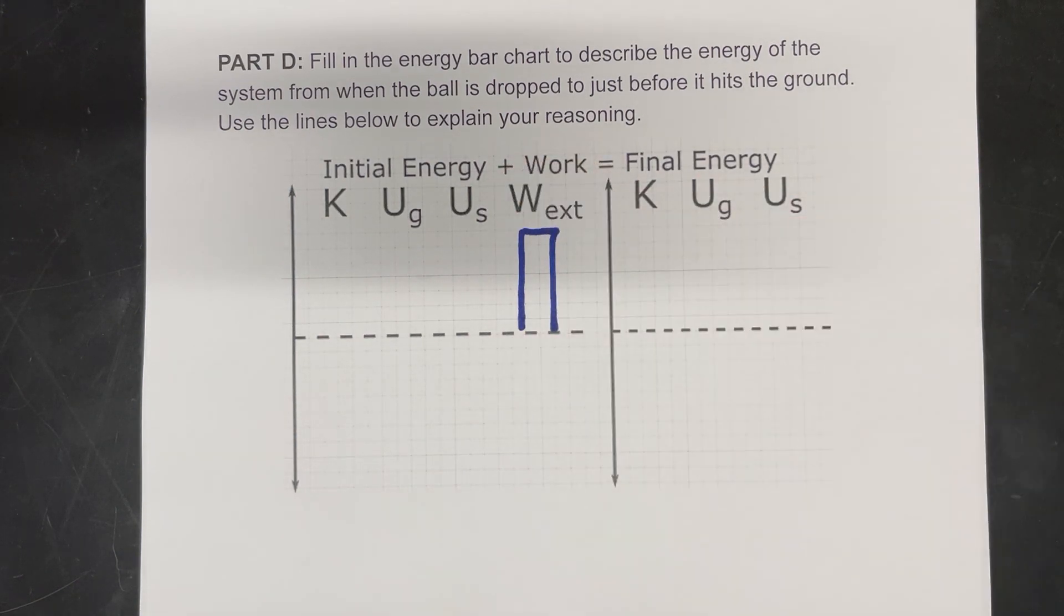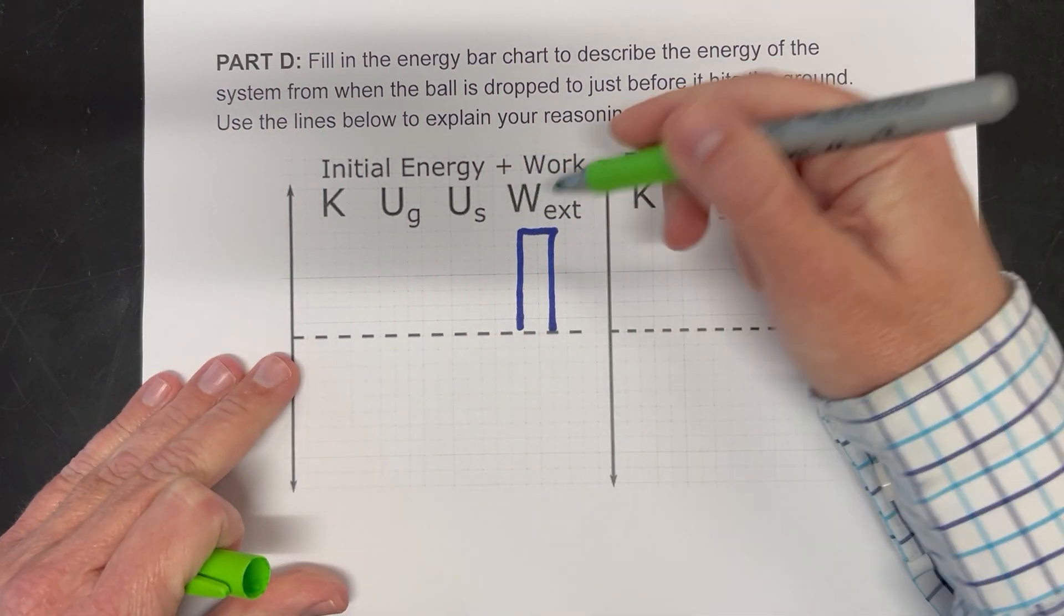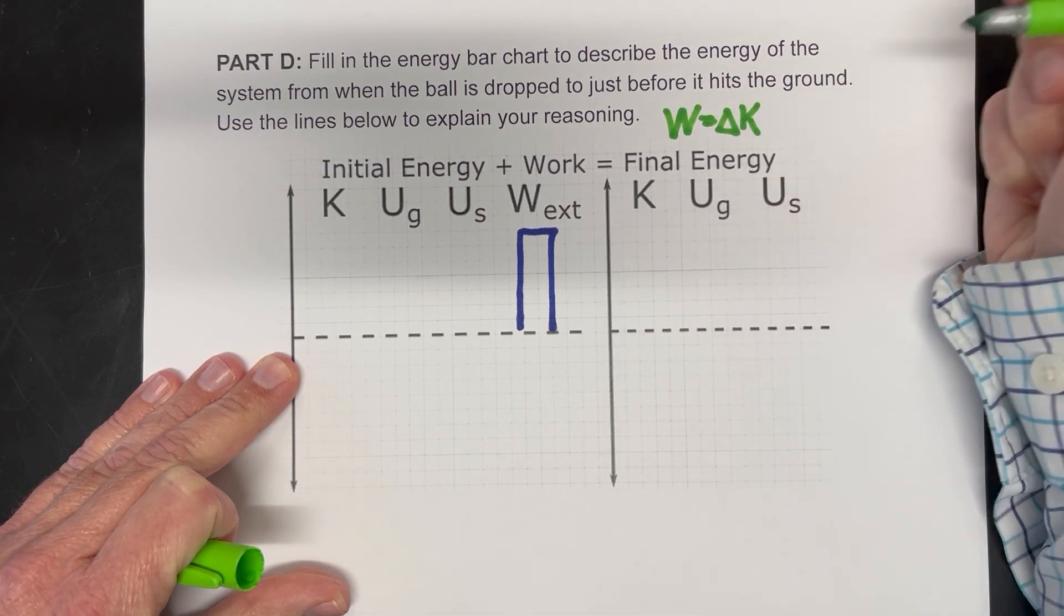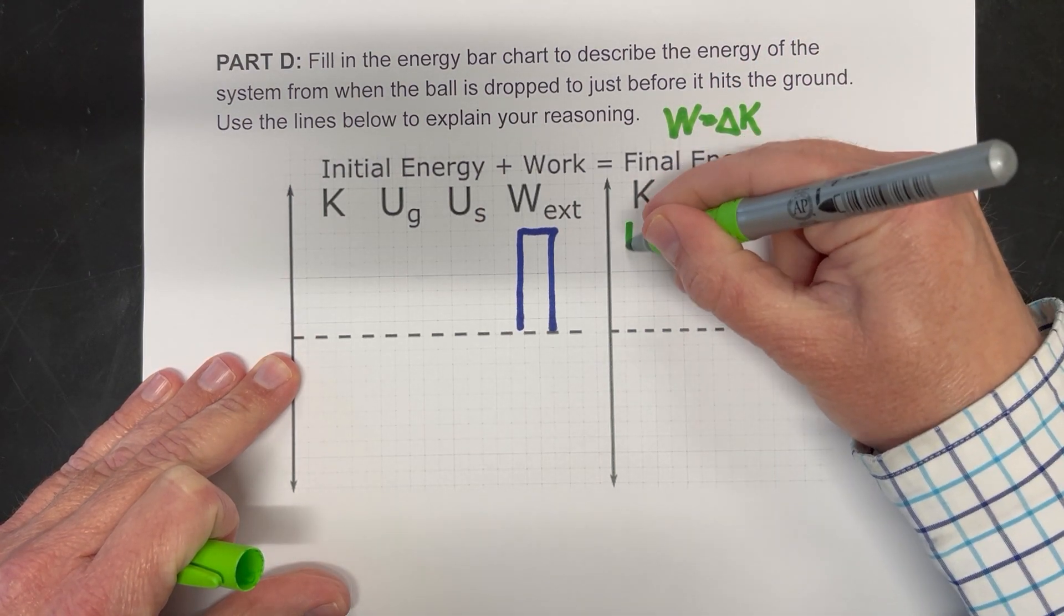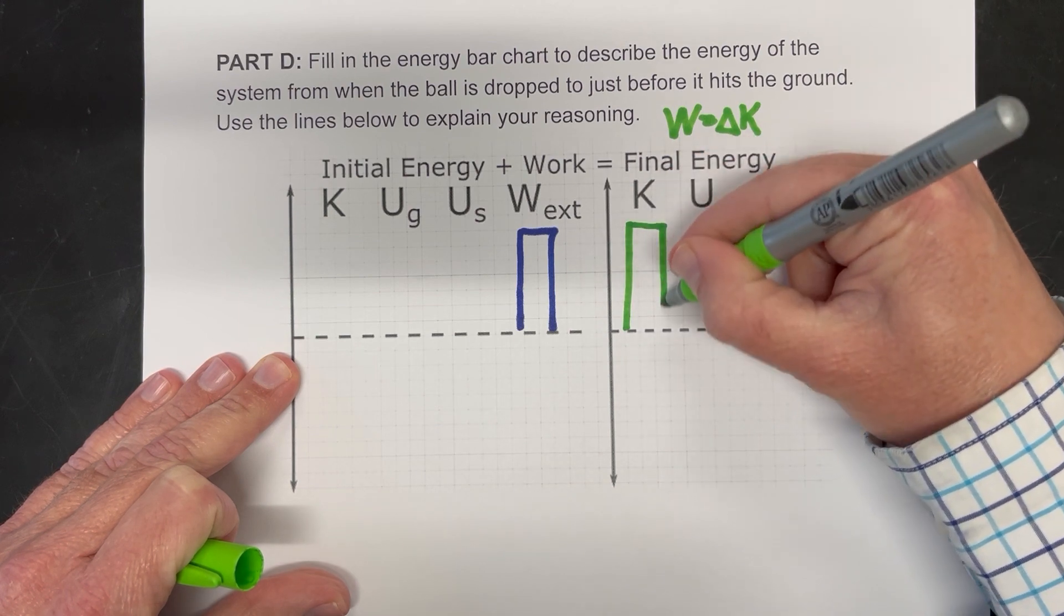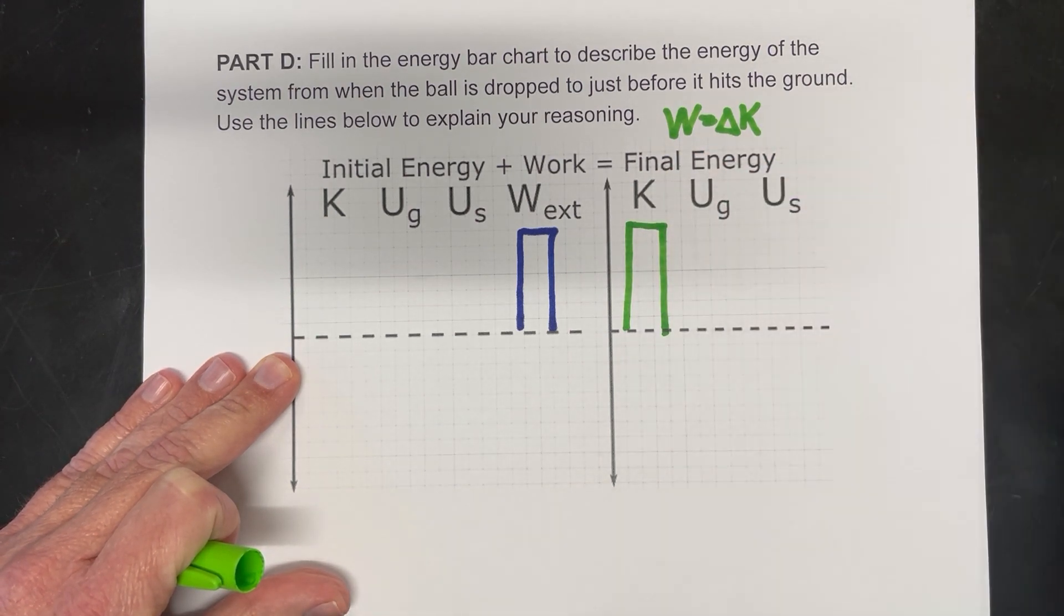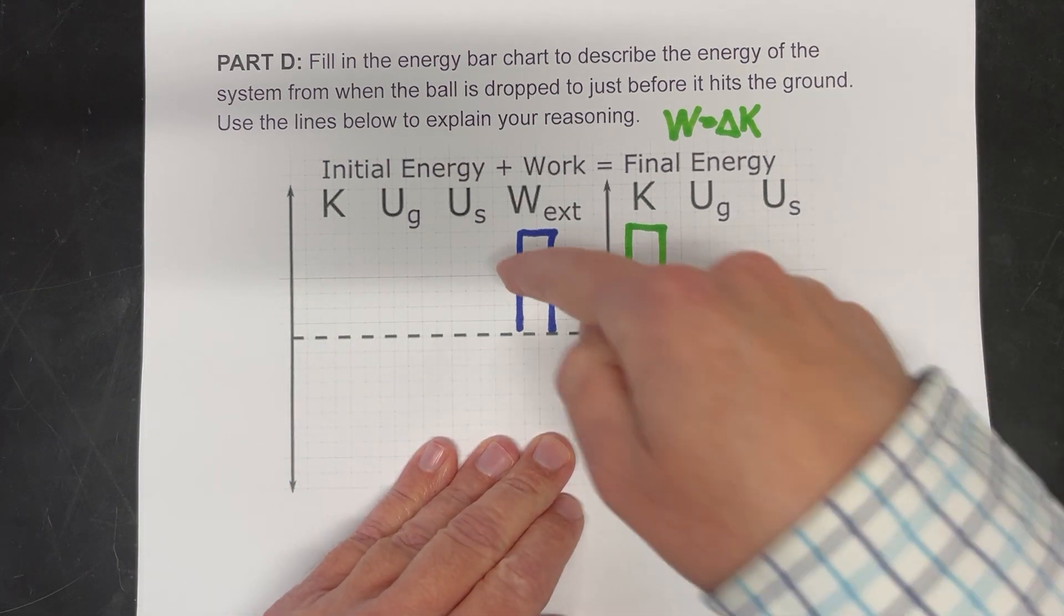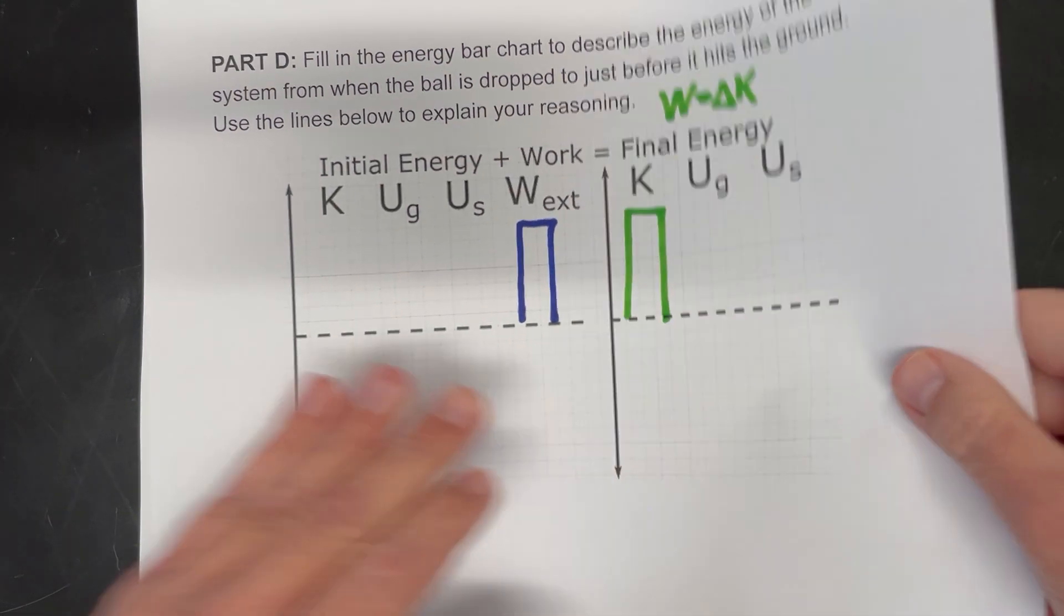And so that is in the beginning. So what happens in the end? This work, as per the work energy theorem, changes the kinetic energy. So all of that work goes into becoming kinetic energy there. We're on the ground, so no gravitational potential energy and no spring. So work becomes kinetic energy.